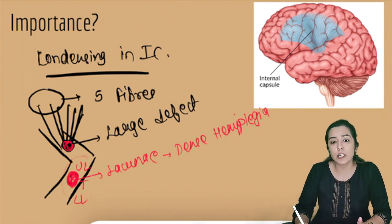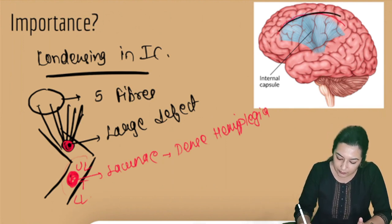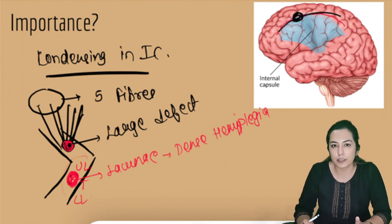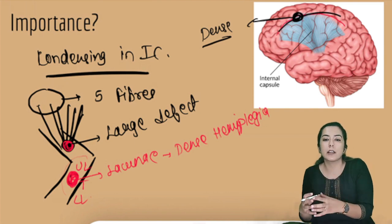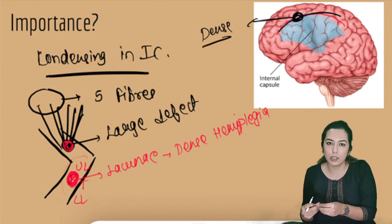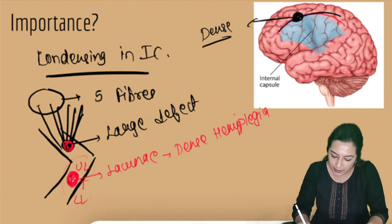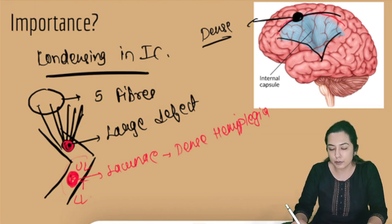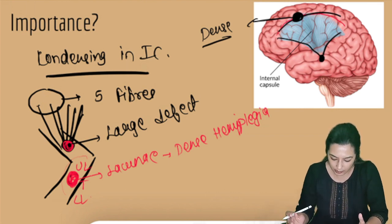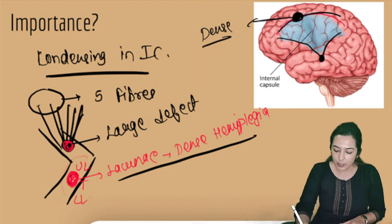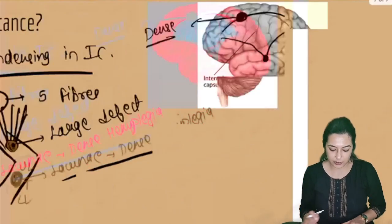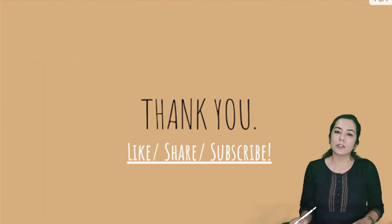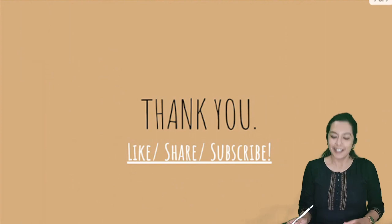That's why patients present with dense contralateral hemiplegia. If a patient presents with dense hemiplegia of one side, we suspect subcortical infarct more than cortical infarct, because a cortical infarct affecting a small area will only cause partial deficits — upper limb more than lower limb, for example. But even a small internal capsule infarct causes a large dense deficit due to fiber condensation. This is the clinical importance of the internal capsule. Thank you for watching — please like, share, and subscribe.